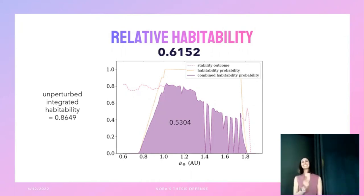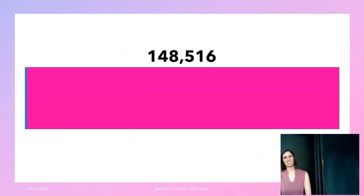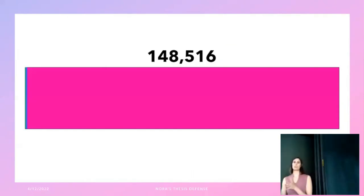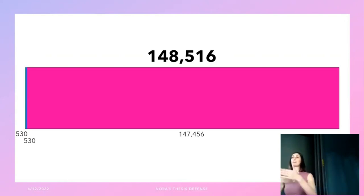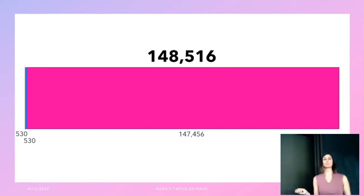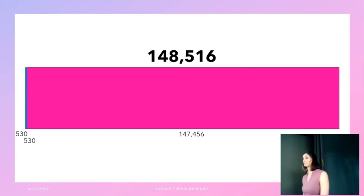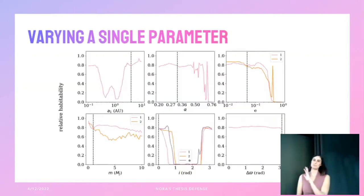I did this for about 150,000 giant planet configurations: two fiducial systems varying one parameter at a time with 530 configurations each, and one enormous eight-dimensional grid of 147,456 configurations varying all system properties in every combination — each run 80 times. This required hundreds of thousands of computing hours on a computing cluster.